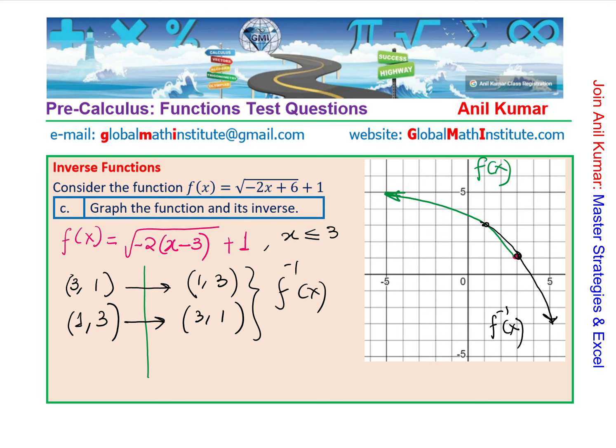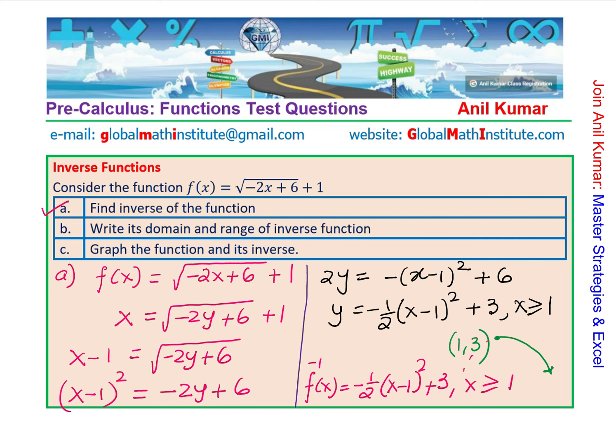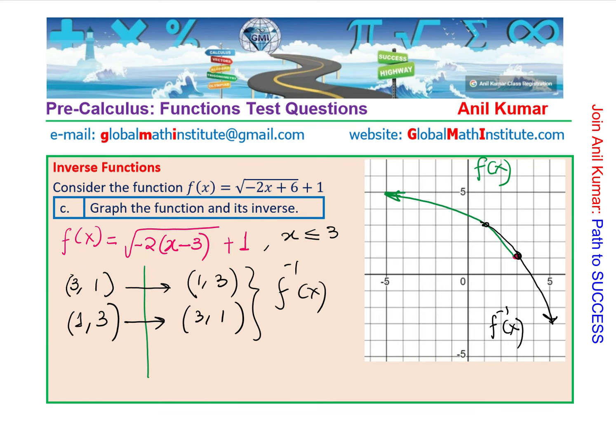That is how we answer this question. We have done all three parts: found the inverse of the square root function, wrote the domain and range of both the function and its inverse, and sketched the graph. Thanks for your time, and all the best.